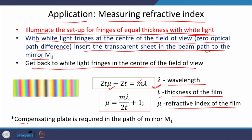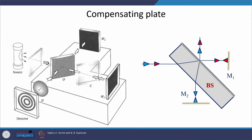A compensating plate is required in the path of mirror M1. To understand why, recall the setup: there is a beam splitter and a compensating plate inserted in the M1 arm. Let us trace the two beams using this simplified diagram to understand the need for the compensating plate.